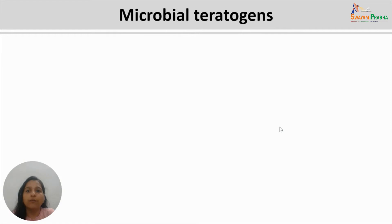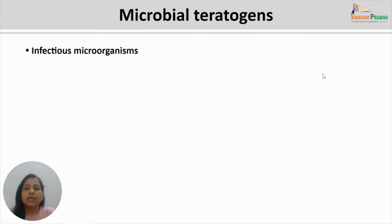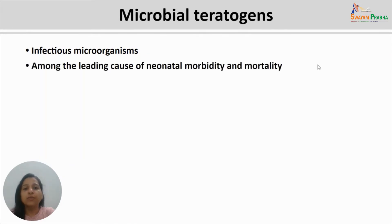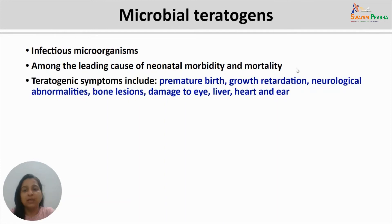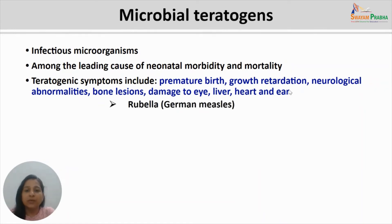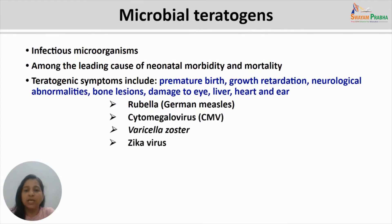The next category among teratogens is microbial teratogens, which includes infectious microorganisms and is among the leading causes of neonatal morbidity and mortality despite availability of many vaccines and drugs. Teratogenic symptoms include premature birth, growth retardation, neurological abnormalities, bone lesions, and damage to the eye, liver, heart, and ear. Major infectious microorganisms in this category include rubella or German measles, cytomegalovirus, varicella zoster, Zika virus, Toxoplasma, Treponema, and parvovirus.